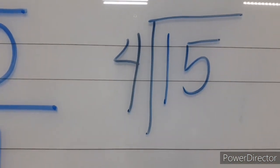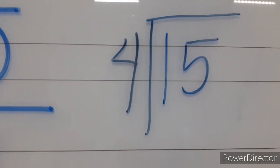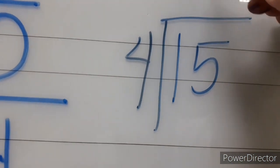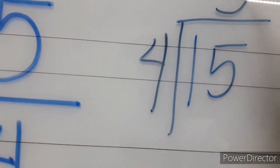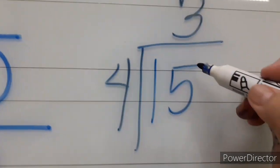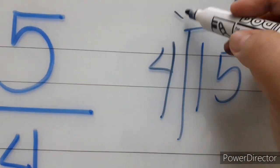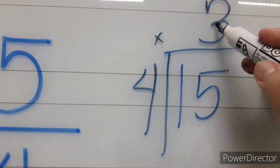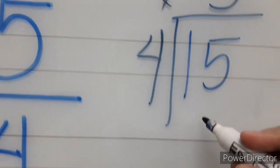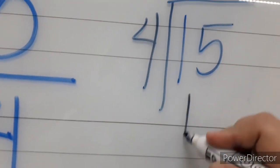How many sets of 4 are there in 15? We have 3 sets of 4. So we have to multiply this time. 3 times 4, we have 12.